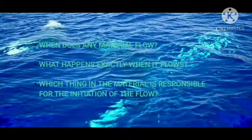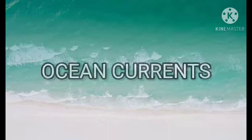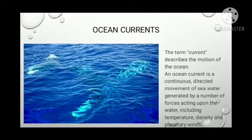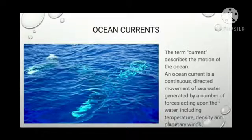When does any material flow? What happens exactly when it flows? Which anomalies in the material are responsible for the inhibition of the flow? Now, students, can anybody tell me what are Ocean Currents? The term current describes the motion of the ocean, i.e. the movement of the ocean. An ocean current is a continuous directed movement of seawater generated by a number of forces acting upon them, including temperature, density, and planetary winds. These are called Ocean Currents.